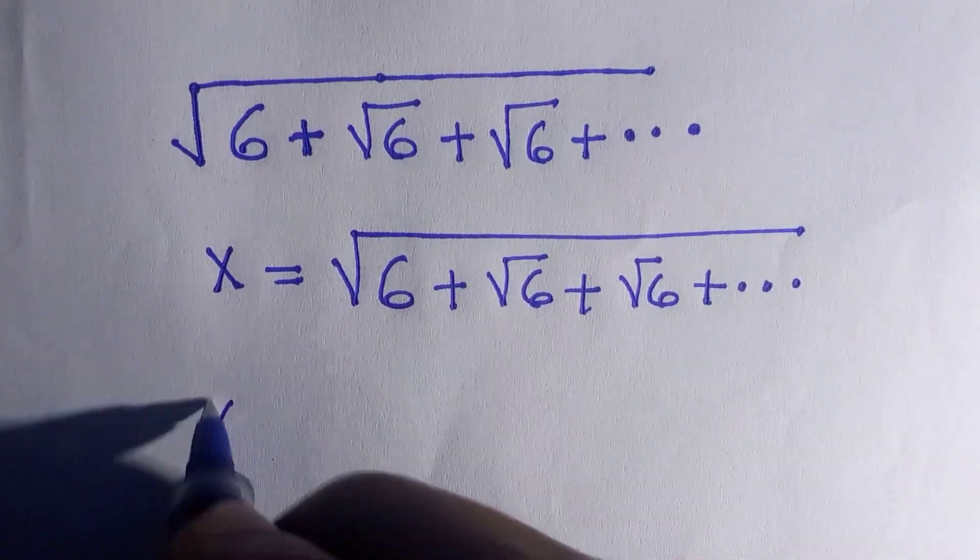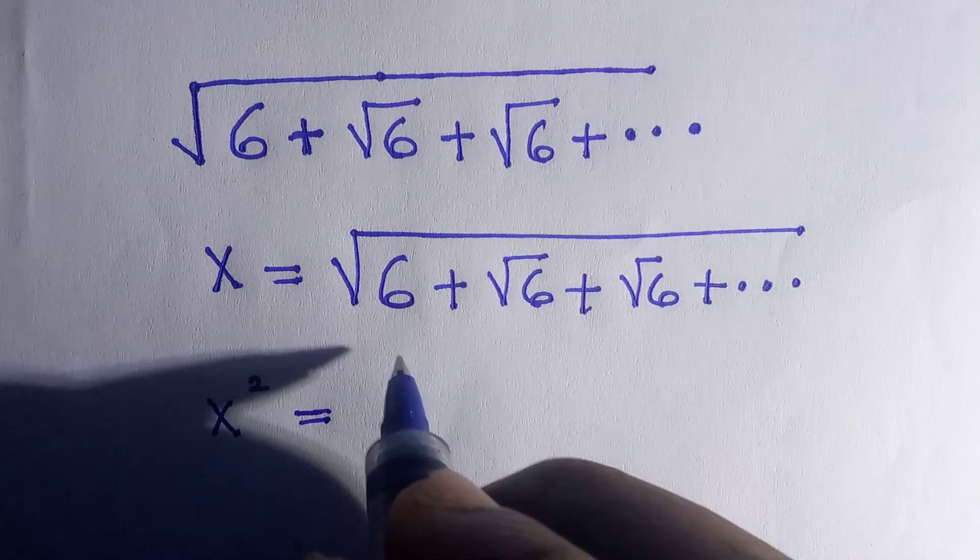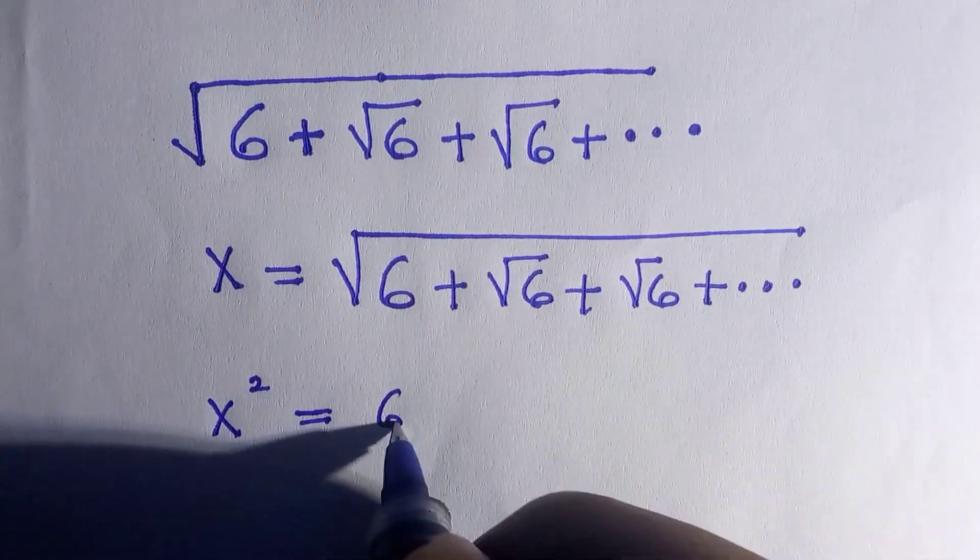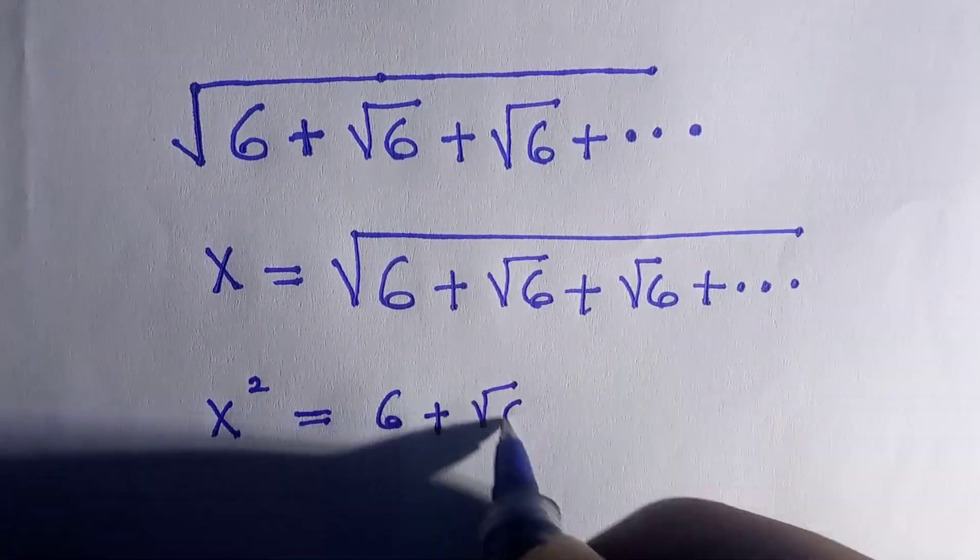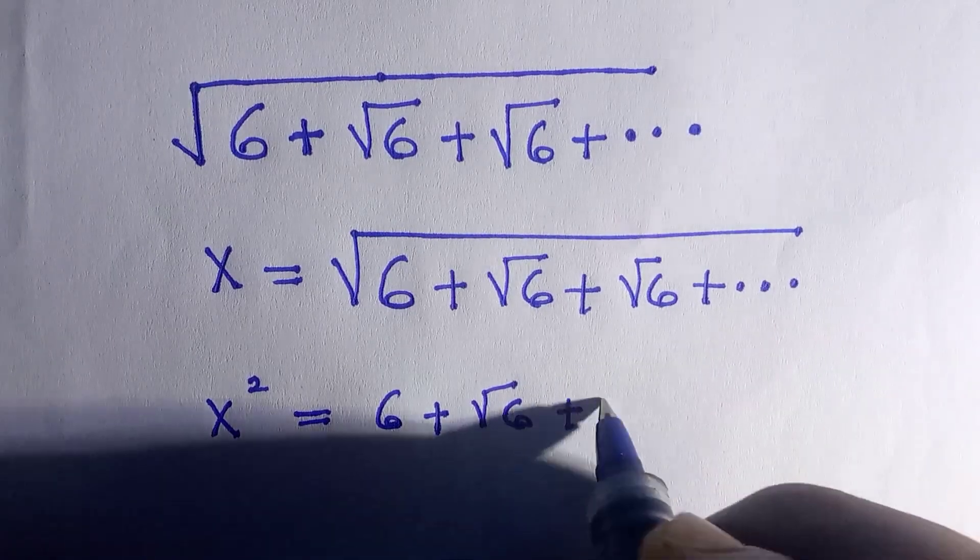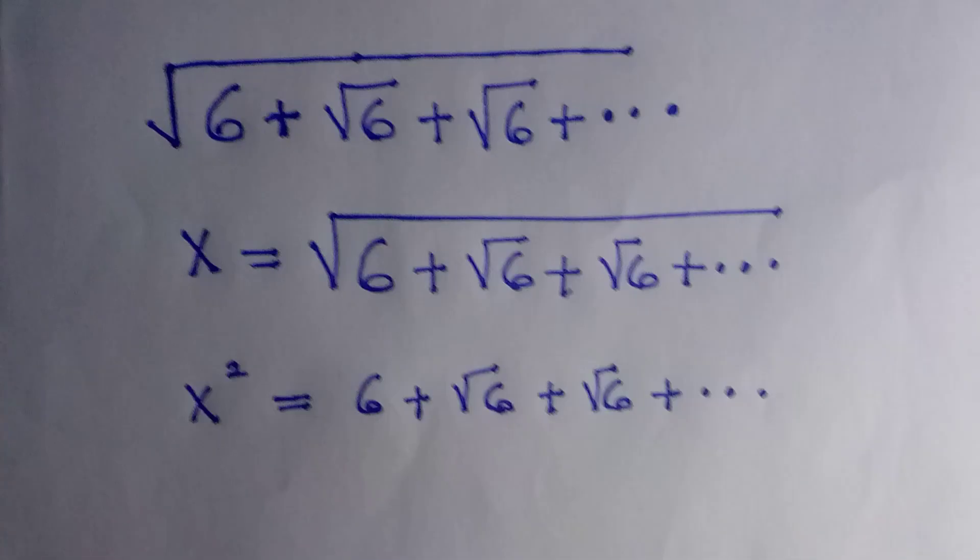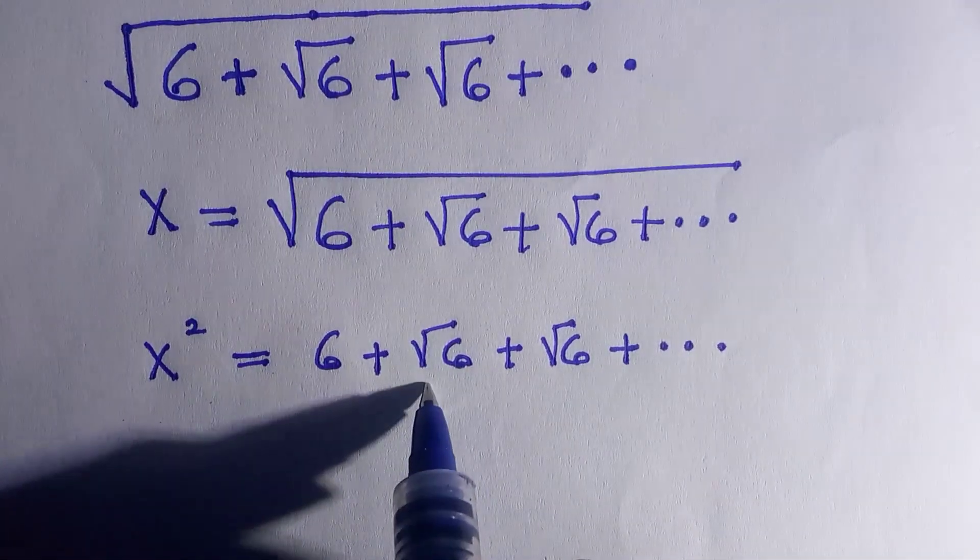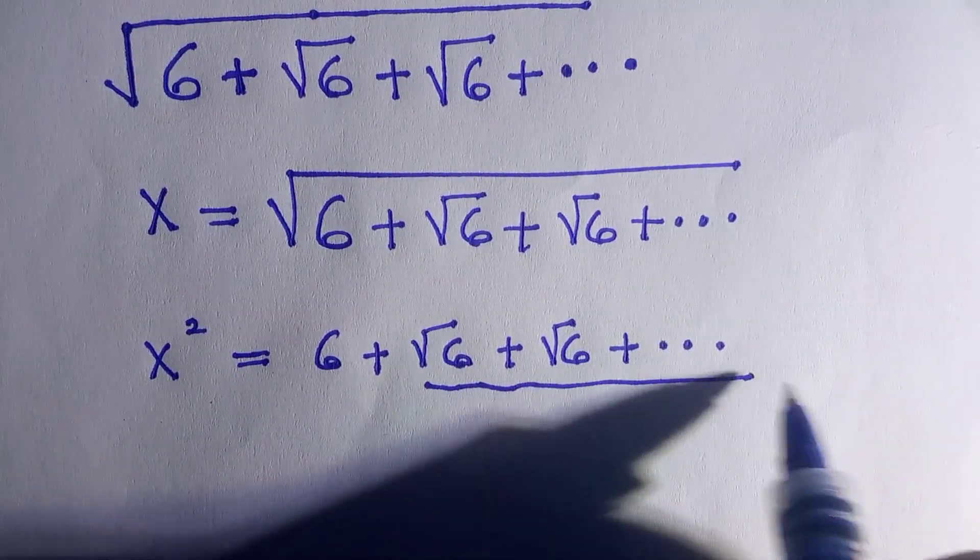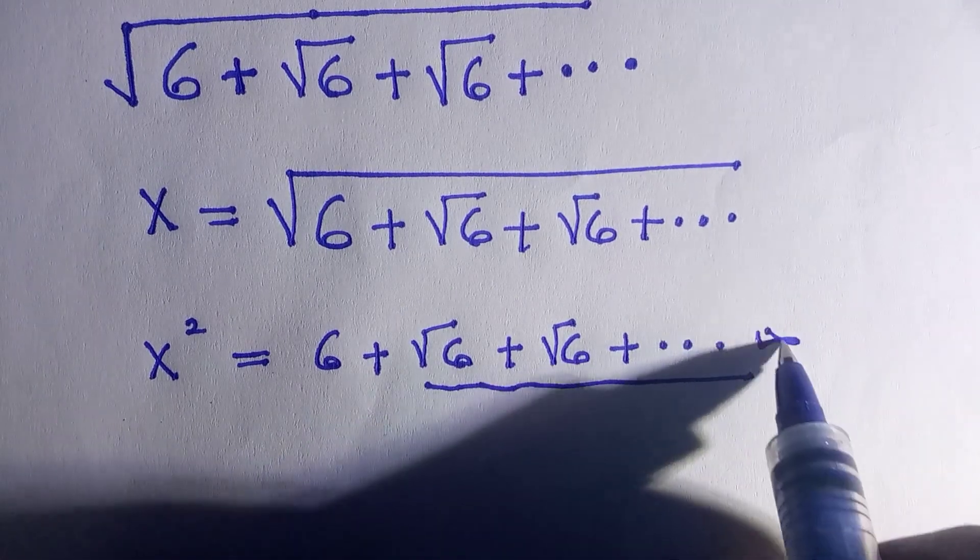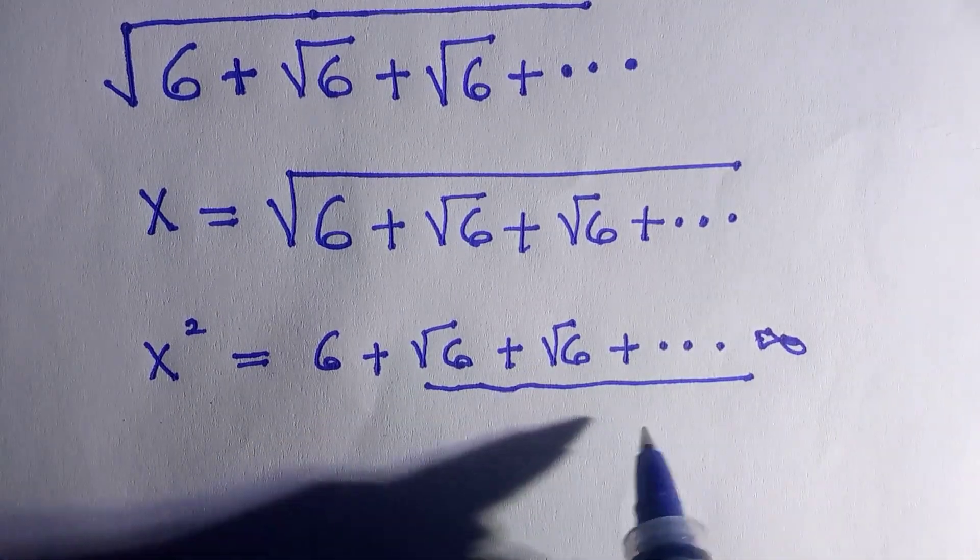Then by taking the square of both sides we're going to have x squared equals, by taking this we have root cancel, then we have 6 plus root 6 plus root 6 plus dot dot dot to infinity. All these starting from root 6 is the amount of x that we let above.